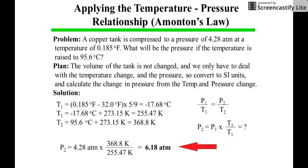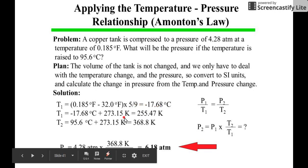Your temperatures have to be converted to Kelvin. The first one, T1, has to be converted because it's in Fahrenheit. You convert it to degrees Celsius first using the formula degrees Fahrenheit minus 32 times 5 over 9. You get negative 17.68 degrees Celsius, then add 273.15 to get the Kelvin unit, which is 255.47 Kelvin.